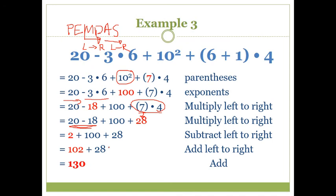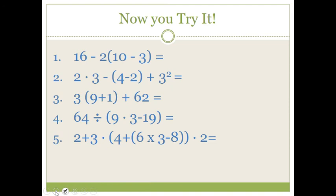Could you have done this all in one line? Yes, but I don't suggest that until you have a lot of practice. You could say 20 minus 18 is 2, plus 100 is 102, plus 28 is 130. But take it one step at a time when you're starting out.